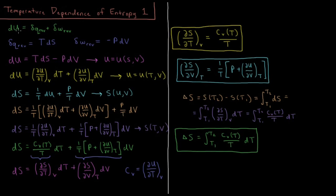Some infinitesimal change in the internal energy, du, equals dqrev plus dwrev — a small amount of heat plus a small amount of work in a reversible process. From our previous definitions, in a reversible process dqrev equals T times the change in entropy, because dS is defined as dqrev over T. So dqrev equals TdS.